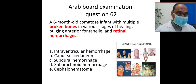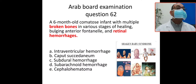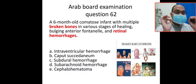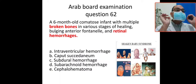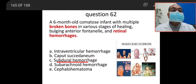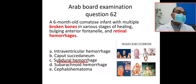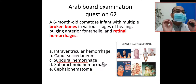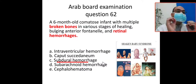If you see here: subdural hemorrhage, retinal hemorrhage, brain hemorrhage, and the baby is comatose with multiple bruises. So what is the most common cranial hemorrhage associated with child abuse or shaken baby syndrome? It will be subdural hemorrhage, which is common in abuse.